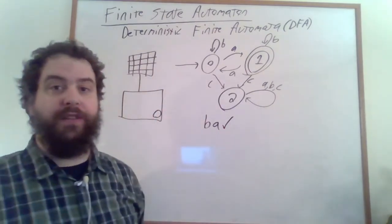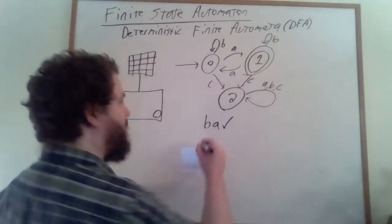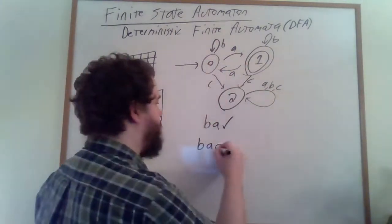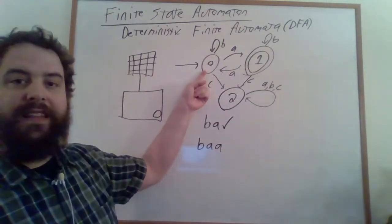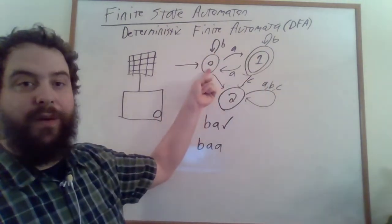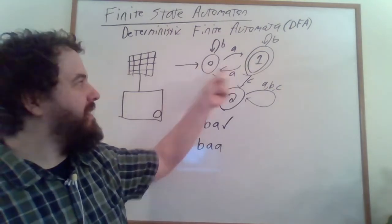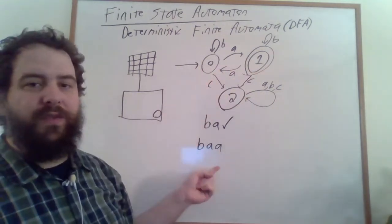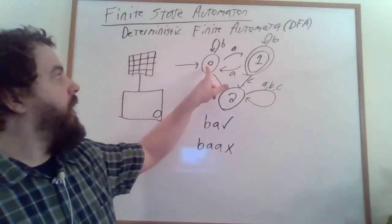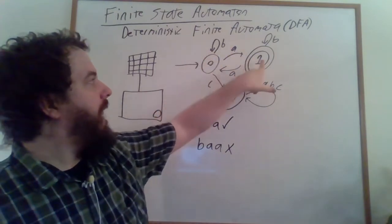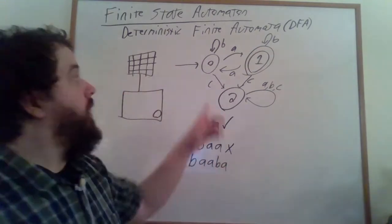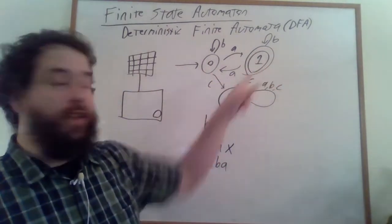This word is a good word — it is part of our language. On the other hand, maybe we could keep going: we could type B, A, and then another A. Now we're back in state 0, so it's no good — the indicator light goes off, this word is not in our language. On the other hand, if we did something like B, A, A, B, A, we would again wind up back in state 1.